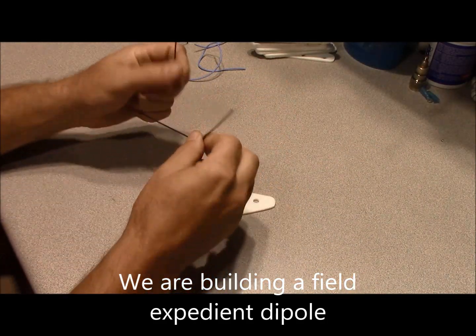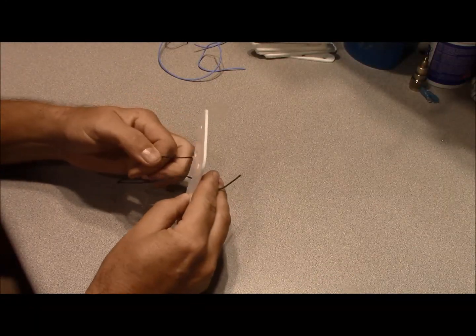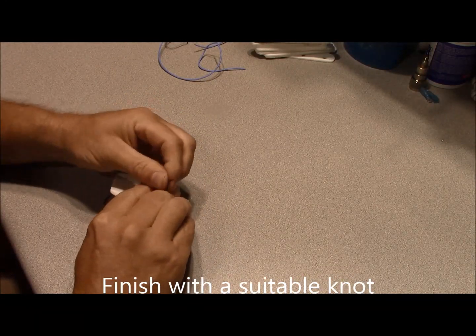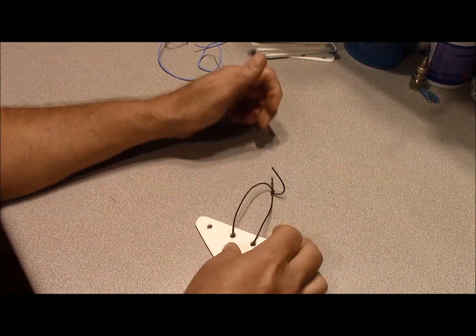First start out with a short piece of cordage and you're going to want to put your hang loop in. We're going through both of these center holes here, like that.